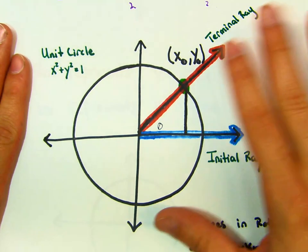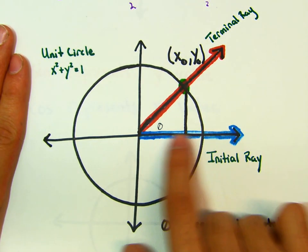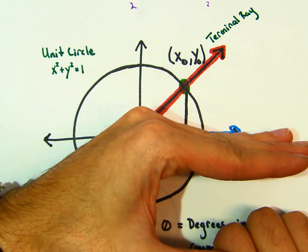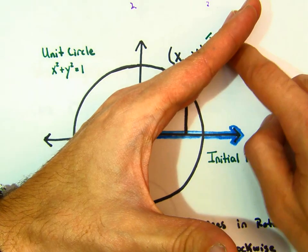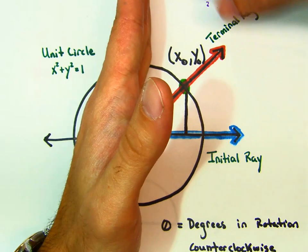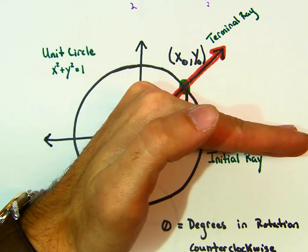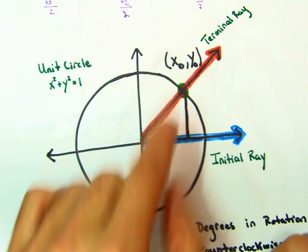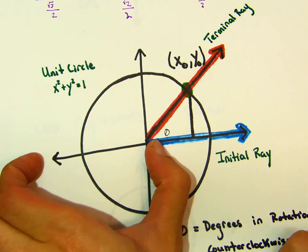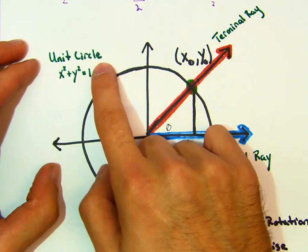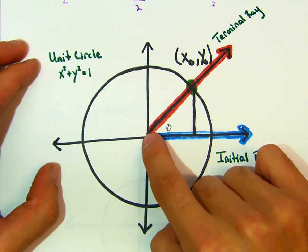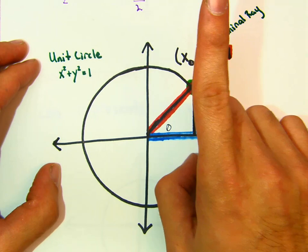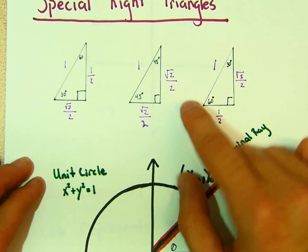Some vocabulary: we always start at the right — this is the initial ray, and where we end is called the terminal ray. If I go 45 degrees, I'm here; 90 degrees puts the terminal ray straight up; 180 degrees puts it to the left. Remember the name of this circle is the unit circle, and its radius is 1 — so the distance from the center to any point on the circle is always 1.